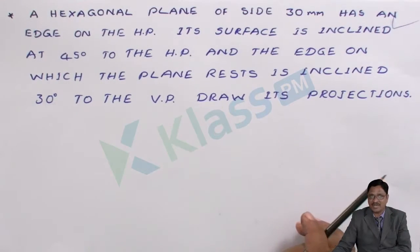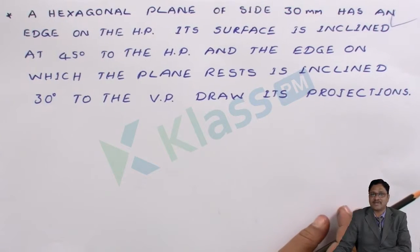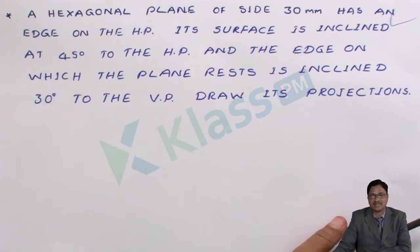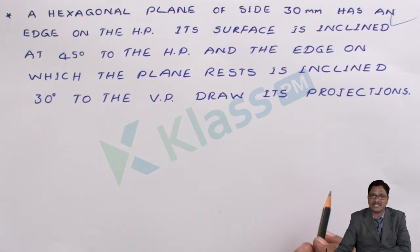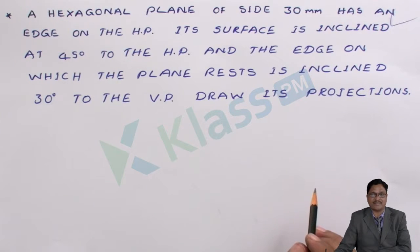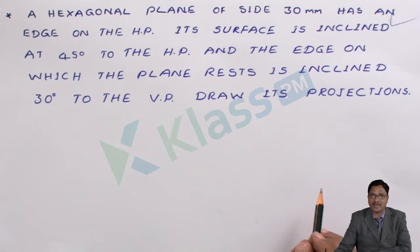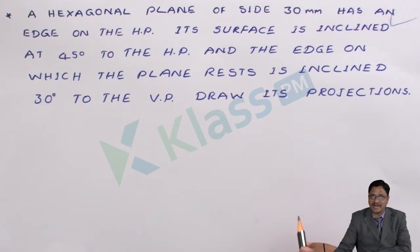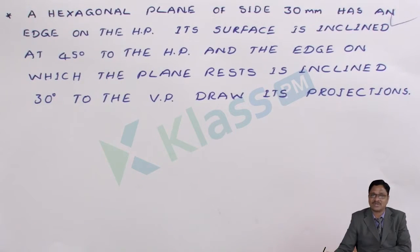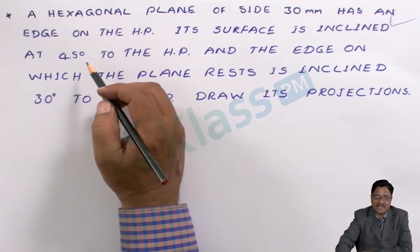Projections mean we need to meet the conditions for the final front view as well as the top view. As you are reading the problem itself, you have to try to make the structural steps based on the conditions given. For any problem, observe the resting condition whenever it is inclined to both planes, so that you can initiate the primary view correctly.